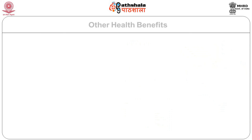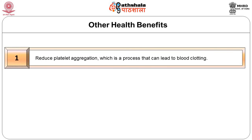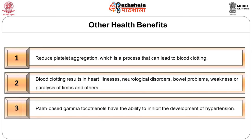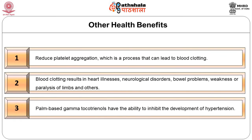Other health benefits of tocotrienols include reducing platelet aggregation, which can lead to blood clotting — a serious condition causing heart illness, neurological disorders, bowel problems, weakness or paralysis of limbs. Palm-based gamma tocotrienols have the ability to inhibit the development of hypertension.